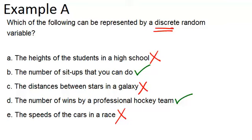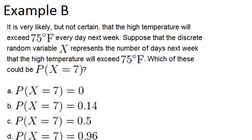Alright, let's look at example B. It is very likely, but not certain, that the high temperature will exceed 75 degrees Fahrenheit every day next week. Suppose that the discrete random variable X represents the number of days next week that the high temperature will exceed 75 degrees Fahrenheit. Which of these could be the probability that X equals 7?